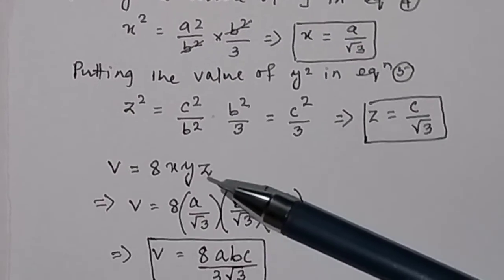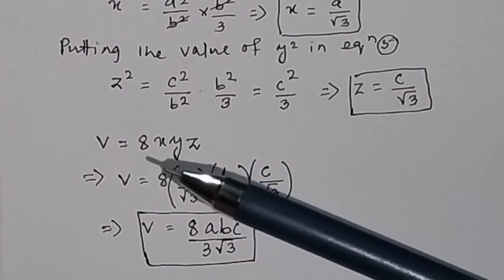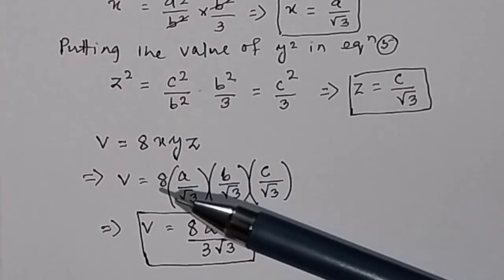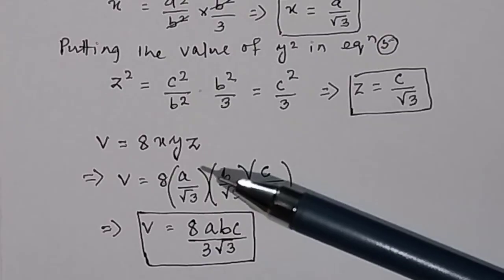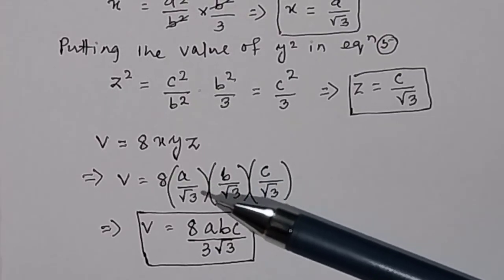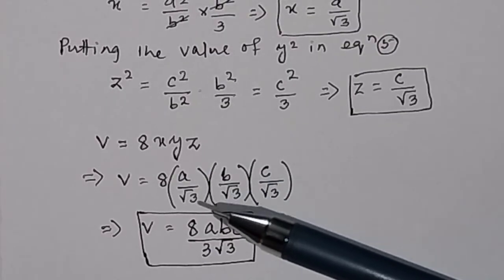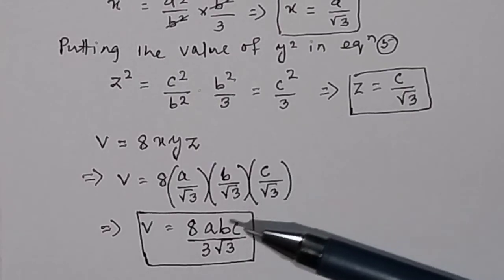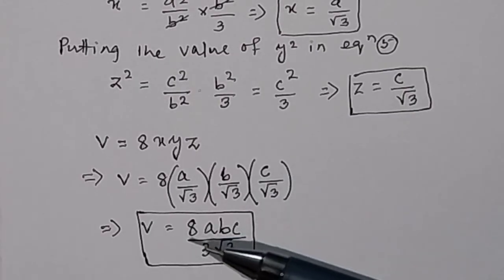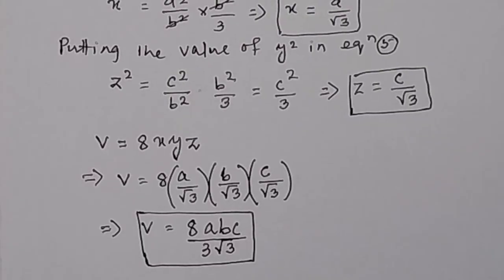Putting the values of x = a/√3, y = b/√3, and z = c/√3 into the volume equation, we get the volume of the parallelepiped equal to 8 × (a/√3) × (b/√3) × (c/√3). So the maximum volume equals 8abc / (3√3).